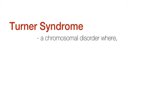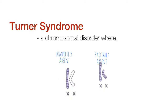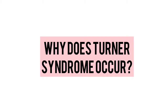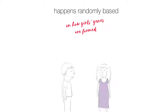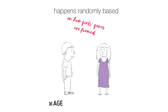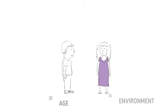This is a chromosomal disorder where one X chromosome is either completely or partially absent. This happens randomly based on how girls' genes are formed, and is not inherited from parents and has nothing to do with the mother's age and environment, unlike other genetic conditions.